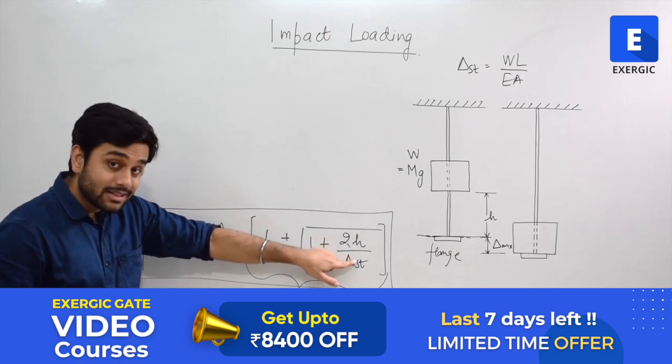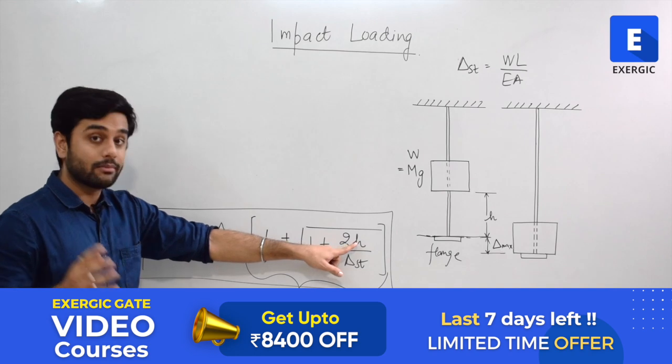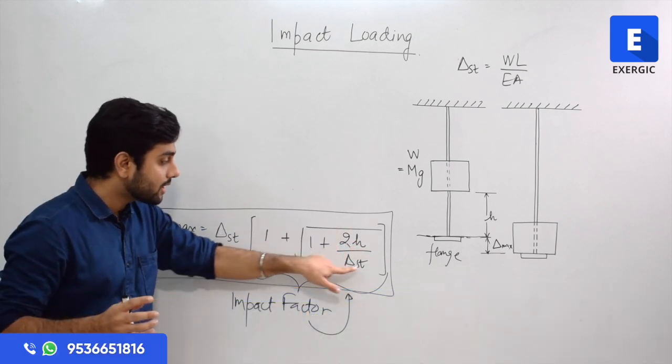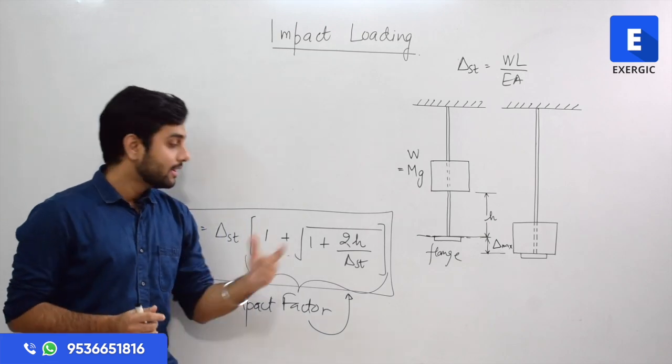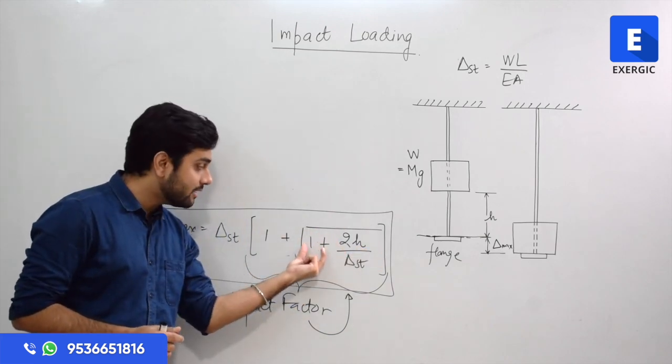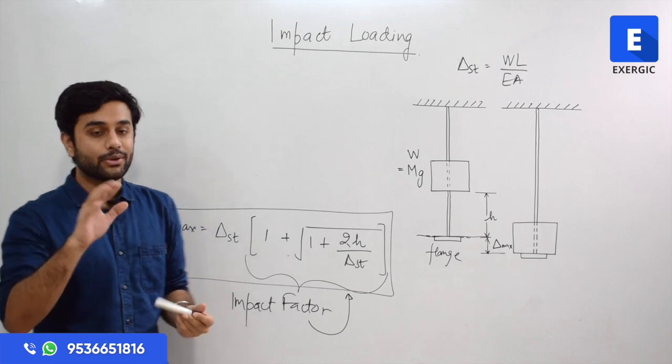So since denominator is in decimal, numerator is a big quantity, this whole term will become even more because denominator is in decimal. So much large that 1 can be ignored. So what can you write?